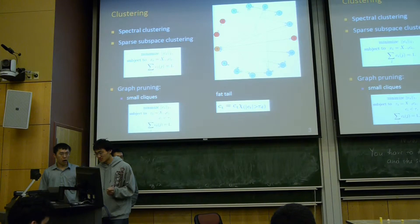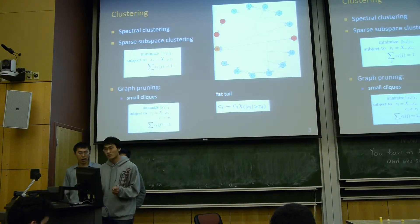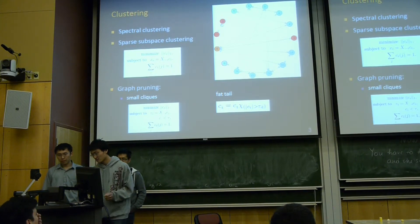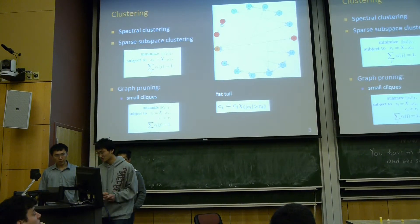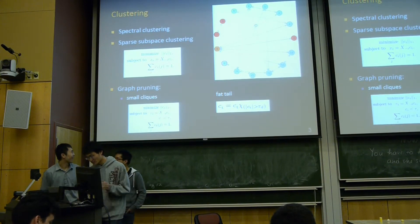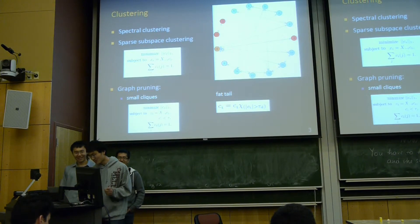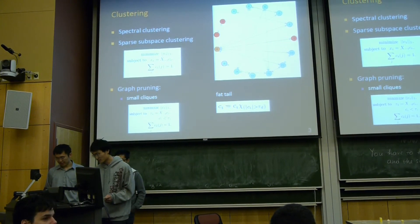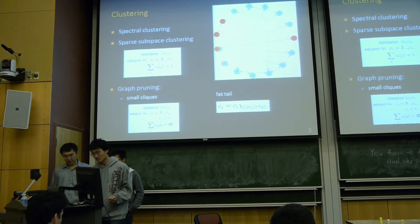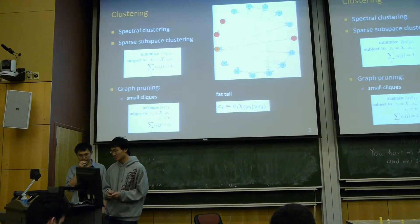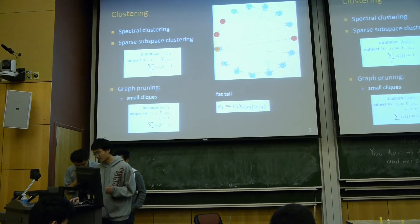But there's still something we want to improve. Sometimes one data or one node forms small cliques, so we want to punish them. And sometimes one node connects to too many nodes. We want to punish both cases, so we have our graph pruning. One is small cliques, and one is what we call fat tap.